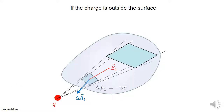We showed before in the last video what happens when the charge was inside the Gaussian surface, but what happens when the charge is outside? So if the charge is outside, start at the center of the charge and project a line that goes through this element of area — that is the element of area where the electric field goes into the surface.